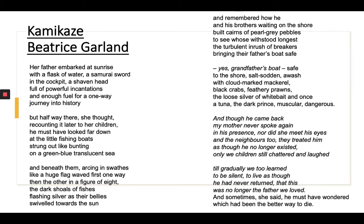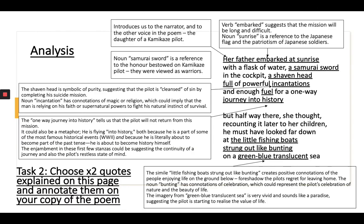Okay, let's start picking this apart. You'll see there's a lot of writing on here — if you need to pause as I talk through, you can. What I want you to do is choose two of the quotes that I've highlighted and make sure you annotate that quote, either on a copy of the poem or on a document. You need to have some examples from each of the next three slides of that analysis. So, 'her father embarked at sunrise' — this first line introduces us to the narrator and the other voice in the poem, who is the daughter.